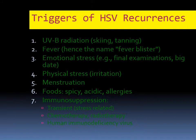Where people have cumulative final exams, that may cause emotional stress. For students, exams are stress. Physical stress, menstruation — some people get triggered by spicy food. The most important thing is immunosuppression. It could be transient, stress-related, or if you are on chemotherapy, or if you are suffering from HIV. Whatever stresses you emotionally and whatever stresses your immune system is going to trigger recurrence that you may have with those infections.